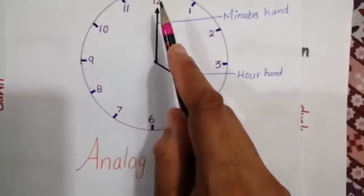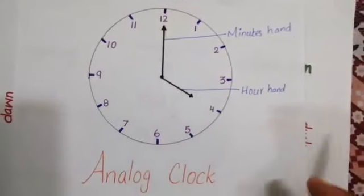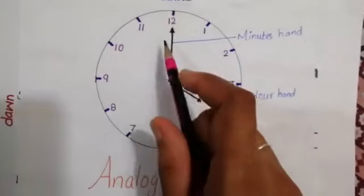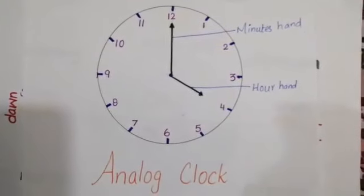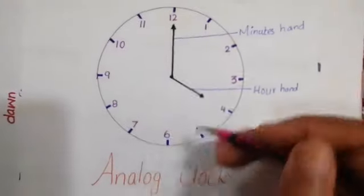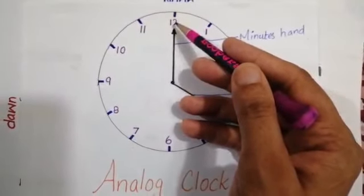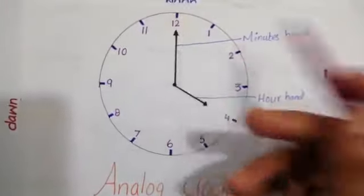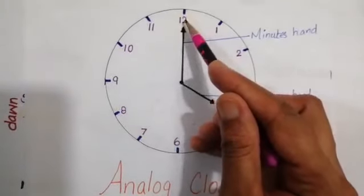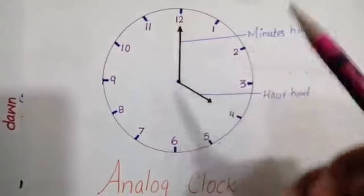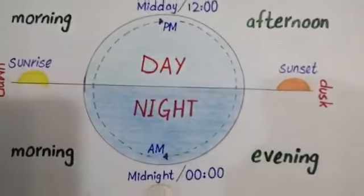One time is day and one time is night - at midnight our new day starts. When the mid-day time is 12 o'clock, our day is half. So when the clock shows 12 o'clock at midnight, our new day starts, and when it shows 12 o'clock at mid-day, our afternoon duration starts.